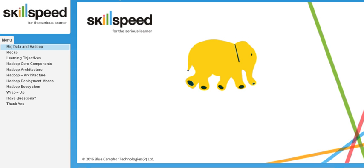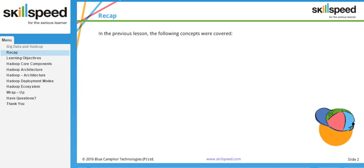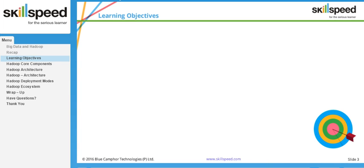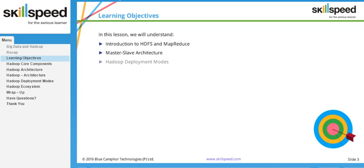In this last lesson, lesson number 10 of Module 1 of the Big Data Hadoop Administration course, we'll be talking about the Hadoop architecture in detail. In the previous lesson, we learned some major drivers for Hadoop adoption across various market sectors. In this session, we'll focus on HDFS and MapReduce, master-slave architecture, different Hadoop deployment modes, and a quick look at the Hadoop ecosystem.